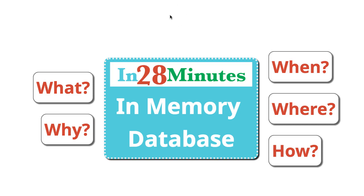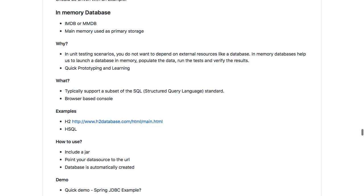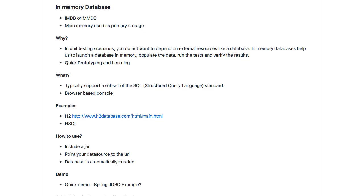Isn't that awesome? Because then you are completely focused on creating the application. Once you have a good prototype built out, you can actually try and use a real database. So, an in-memory database is all about using your main memory — your application memory — as the primary storage. You do not install a separate database.